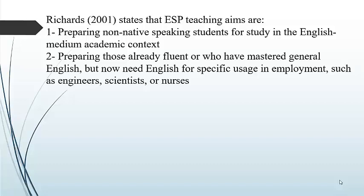The second aim is preparing those who are already fluent or have mastered general English, but now need English for a specific usage in employment, such as engineers, scientists, or nurses. In this case, the group of learners has a good level of English, but they need to learn a specific usage in a particular field — those specific usages of the language in their employment itself, for their work itself.